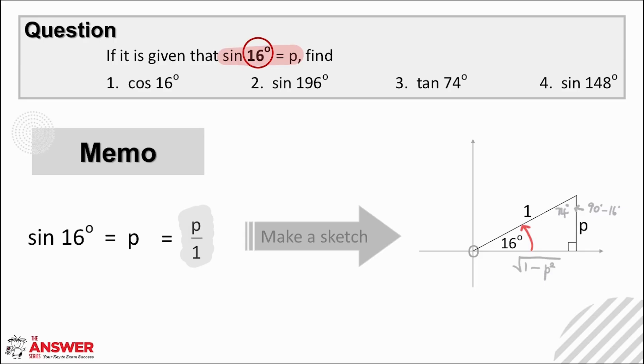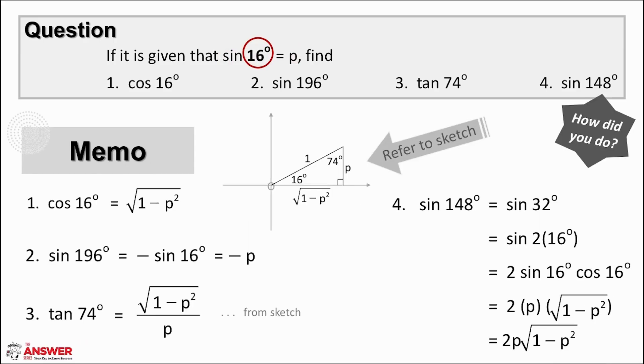Once you've made your sketch including all the necessary info and you've set your thinking to be open to looking for all possible angle options you're all set to tackle the rest of the question. For cos of 16 degrees you can read directly off the sketch adjacent over hypotenuse or x over r. This is √(1 - p²) over 1 which is just √(1 - p²).